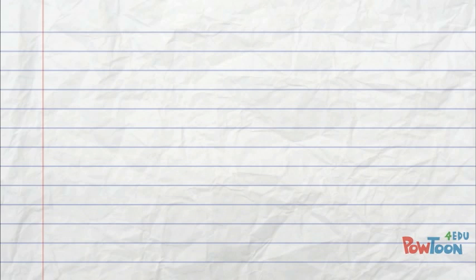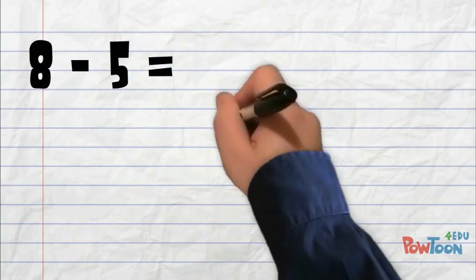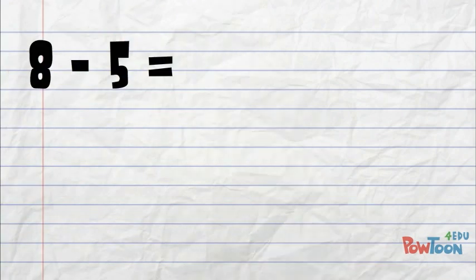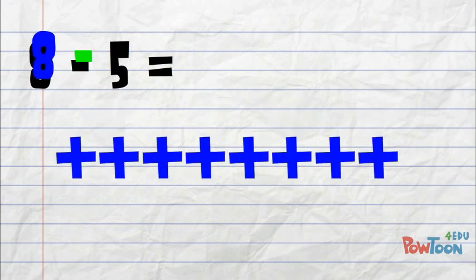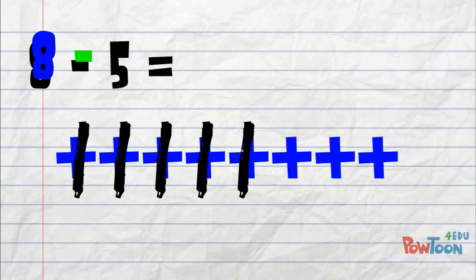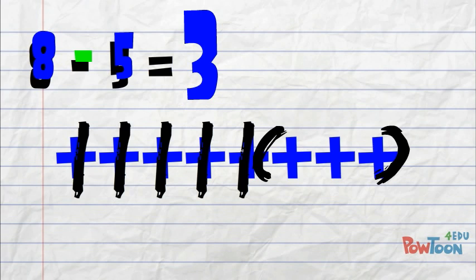Let's apply this idea to our first problem. 8 minus 5, or positive 8 minus positive 5. Start with 8 positive tiles. To subtract, we are going to take away positive 5. We then circle the leftovers, which gives us our answer of positive 3.